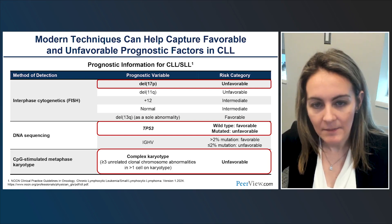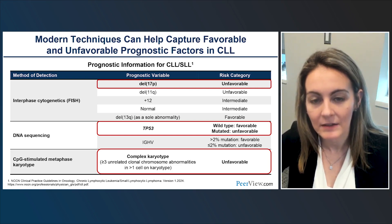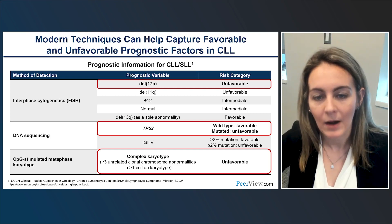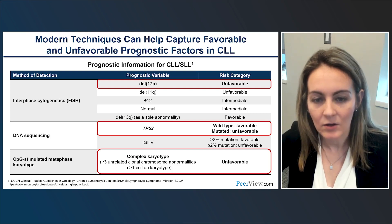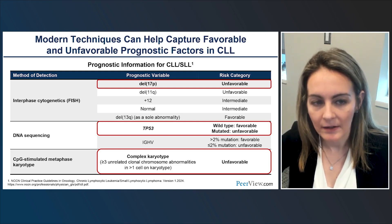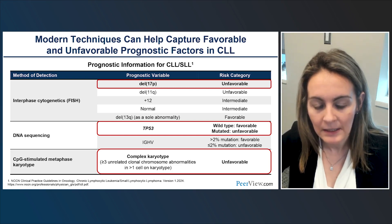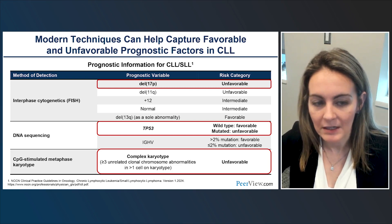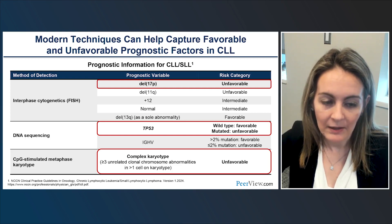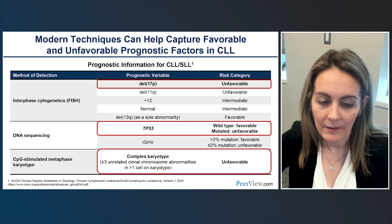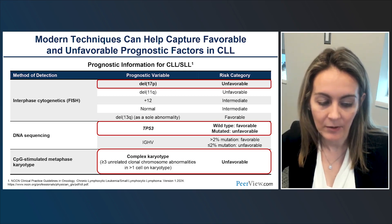Prognostic testing should be performed prior to initial treatment and with each line of therapy. With the exception of IGHV mutational status, which does not change over time, patients can acquire other cytogenetic and molecular abnormalities. Key tests include deletion 17P by FISH, TP53 mutation by DNA sequencing, and karyotype testing, since complex karyotype with three or more abnormalities is associated with less favorable outcomes.